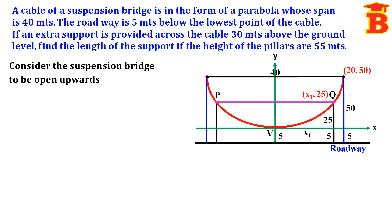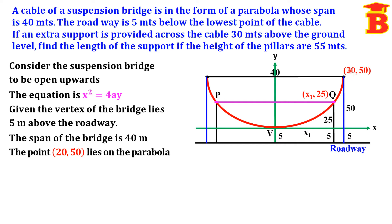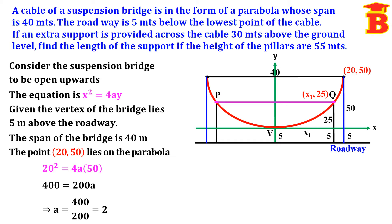The concept is: write the equation of the parabola and substitute the points. Since the parabola is open upwards, the equation is x² = 4ay. The point (20, 50) lies on the parabola, so substituting: 20² = 4a × 50, which gives 400 = 200a, therefore a = 400 ÷ 200 = 2.